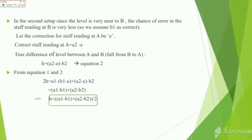Similarly, in the second case, true difference of level between A and B, that is h, is equal to a2+e-b2. Let it be the second equation. From equations 1 and 2, we will get h is equal to (a1-b1 + a2-b2) / 2, that is the average of difference is observed from the opposite banks of the river.